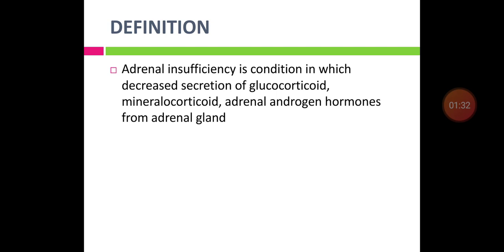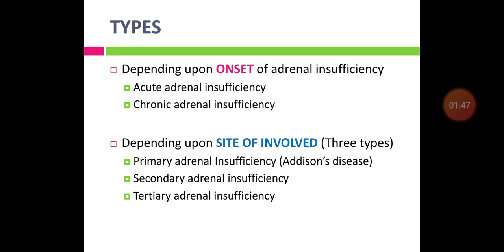By definition, adrenal insufficiency is a condition where there is decreased secretion of all three hormones — glucocorticoids, mineralocorticoids, and androgens — from the adrenal gland. Depending upon the onset, adrenal insufficiency can be acute — sudden onset — or chronic — insidious onset over days to months.